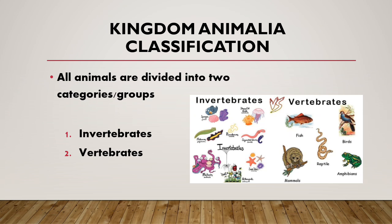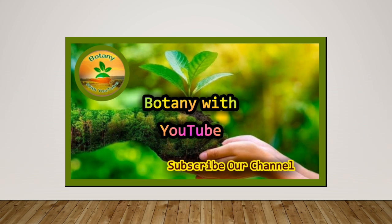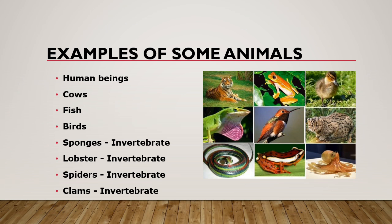Kingdom Animalia classification: they may be invertebrates and vertebrates — there are two categories or groups of the Animalia kingdom. You can see here in the diagram vertebrates and invertebrates. If you are new to our channel, please subscribe.